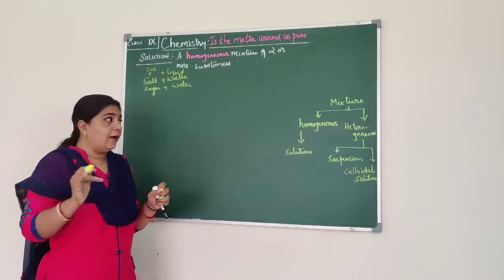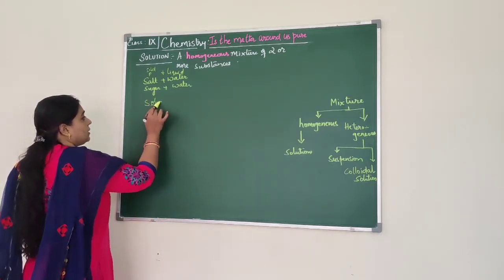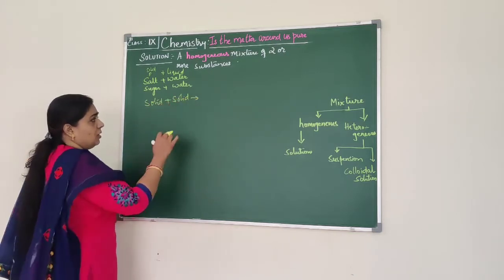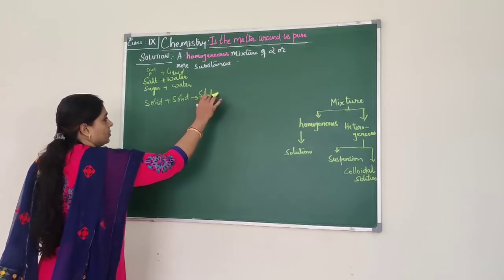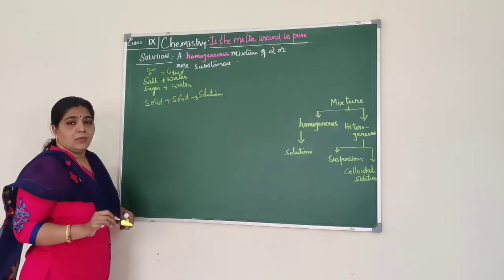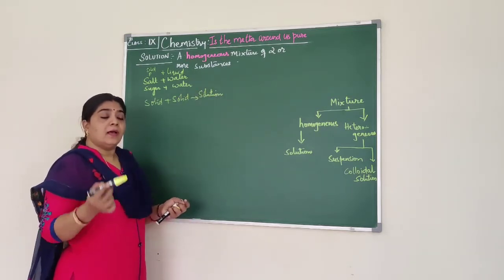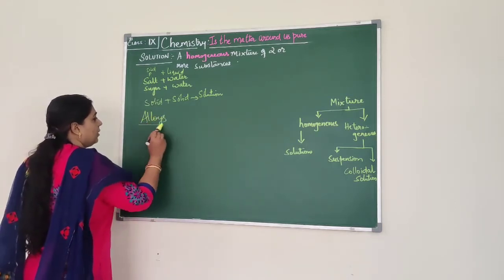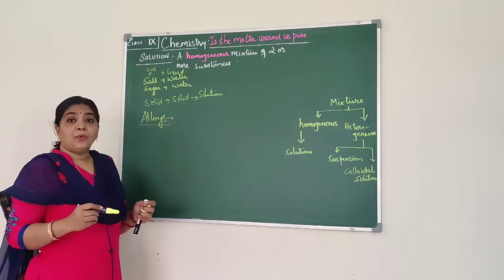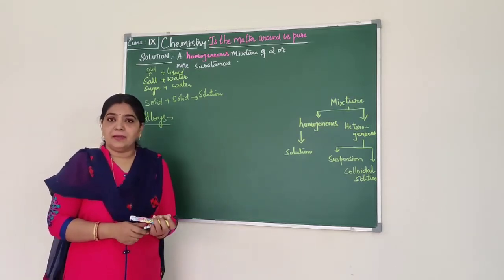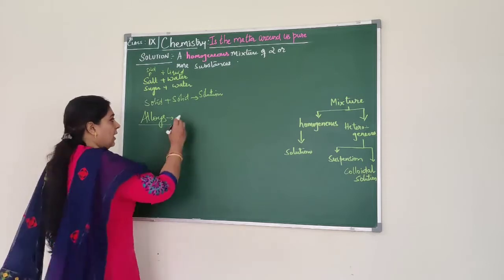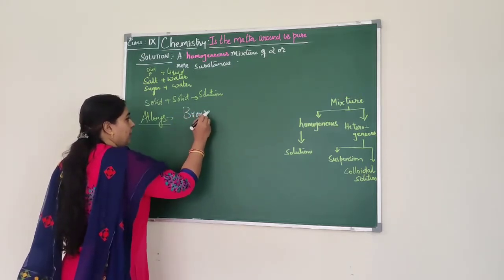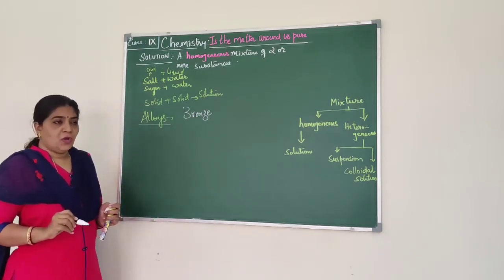You will also have a solution of solid plus solid. A solid plus solid solution is also formed. The example for that is alloys. Have you heard of alloy? Bronze — the bronze medal, bronze idols — bronze is an alloy. It is a homogeneous mixture.